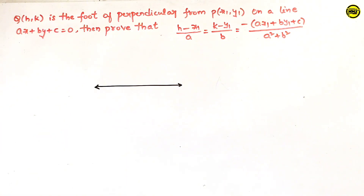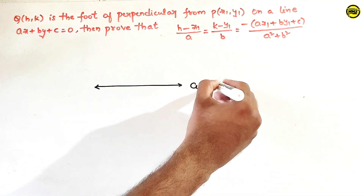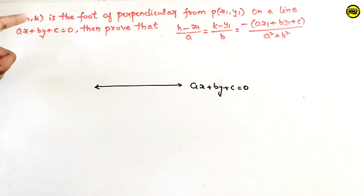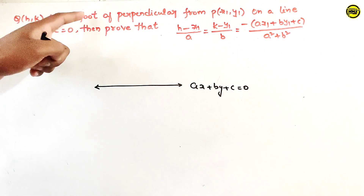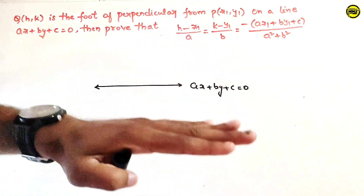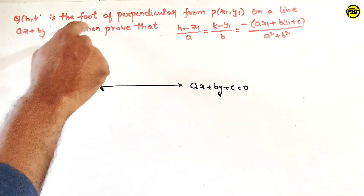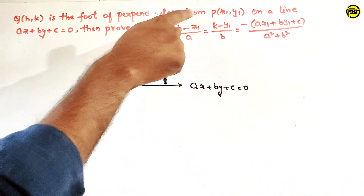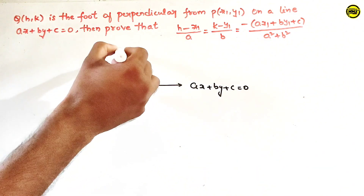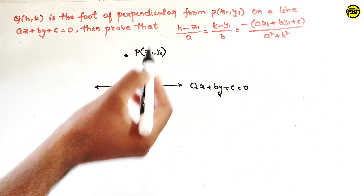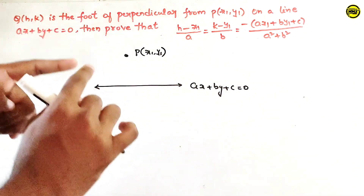The image of the point is the same. The foot of the perpendicular is the same. So, the straight line is ax plus by plus c equal to 0. Q of h, k is the foot — which we call the foot of the perpendicular from P of x1, y1. Now we have the point P of x1, y1. From this point you can draw the perpendicular.